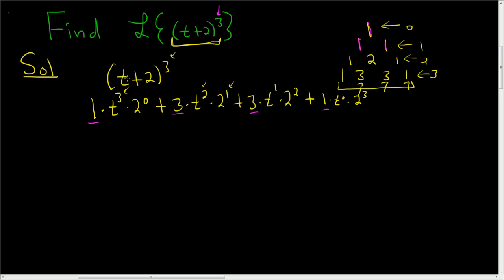And then you write t, and you write powers of t, so 3, 2, 1, 0. So you go down, and then with the 2, you go up: 0, 1, 2, 3. Boom, there it is.